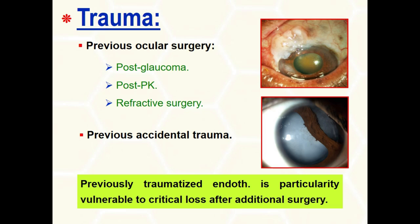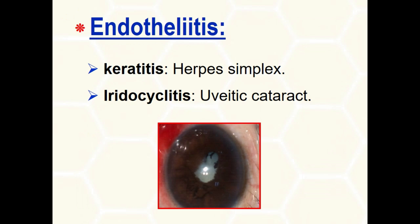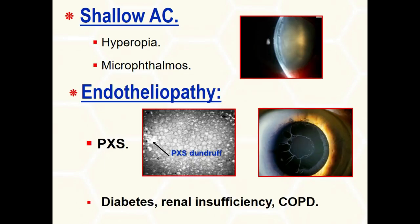Also, any prior ocular surgery such as penetrating keratoplasty, intraocular lens implantation, or pars plana vitrectomy with silicone oil can decrease the endothelial cell count. All types of keratitis or iridocyclitis are associated with endotheliitis, hence endothelial cell loss. Eyes with very shallow anterior chambers tend to have a lower cell count, and intraoperatively the short working distance makes the endothelium more liable to trauma.